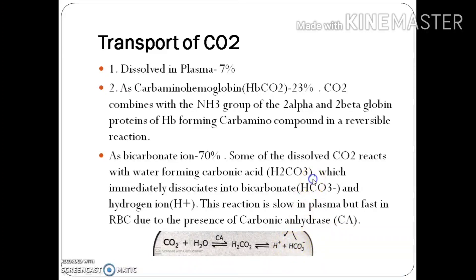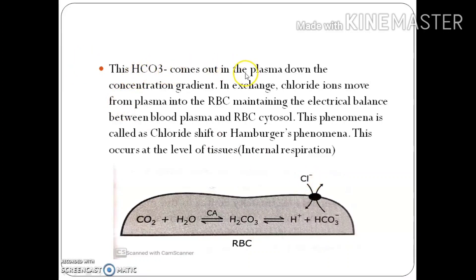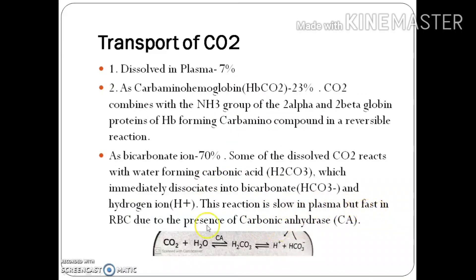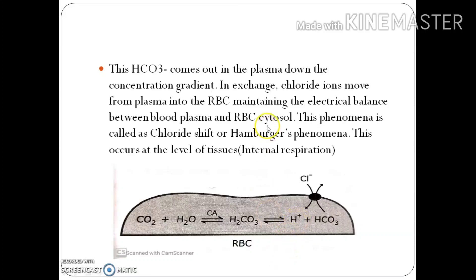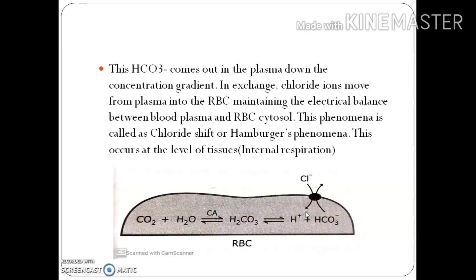The HCO3- formed in the RBC diffuses out into the plasma down the concentration gradient. In exchange, chloride ions (Cl-) move from plasma into the RBC, maintaining electrical balance between the blood plasma and the RBC cytosol. This phenomenon is called the chloride shift, or Hamburger's phenomenon. This occurs at the level of tissues — at the level of internal respiration.